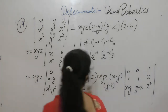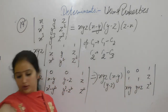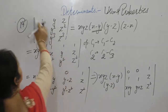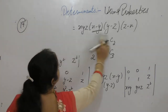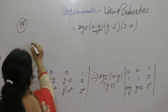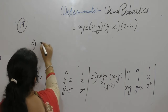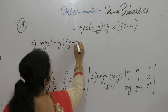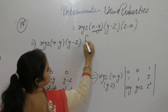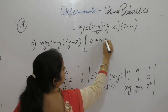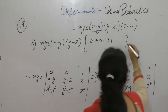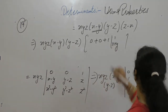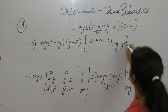Now we can expand it along the first row, since it has the maximum number of zeros. So x, y, z times (x minus y)(y minus z), and we get 0 plus 0 plus 1 into 1, x plus y, 1, y plus z.